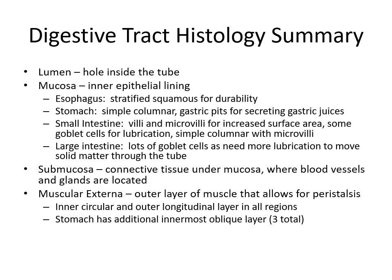In the stomach we'll have gastric pits. In the small intestine we have villi and microvilli. In the large intestine we have a lot of goblet cells. Then moving out from mucosa we have submucosa, muscularis externa with its inner circular and outer longitudinal layers in all regions, and an additional third oblique innermost layer in the stomach. And then outside of the muscularis externa is the serosa, the connective tissue that surrounds everything else. I hope that was helpful — good luck with your lab this week.